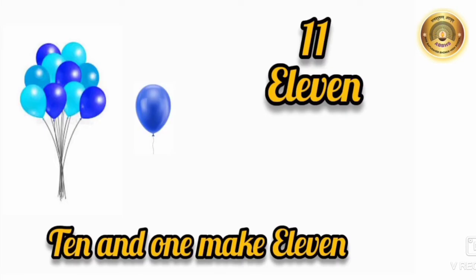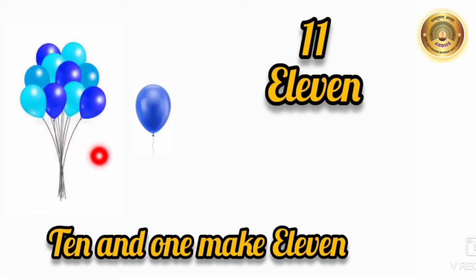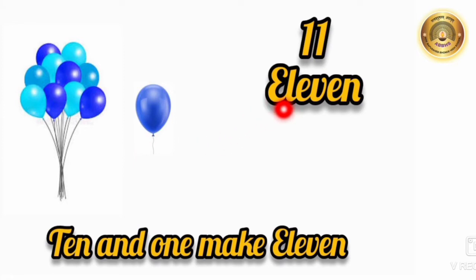Children, let us count the balloons one by one: 1, 2, 3, 4, 5, 6, 7, 8, 9, 10. We have grouped the balloons in 10s, so it became 1 ten. Now here we have 10 balloons and here we can see only 1 balloon. So let us see how the next number is formed. 10 and 1 make 11. So the next number which comes after 10 is 11.